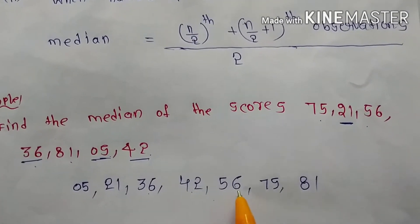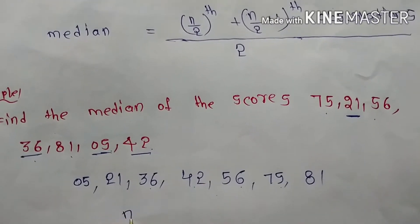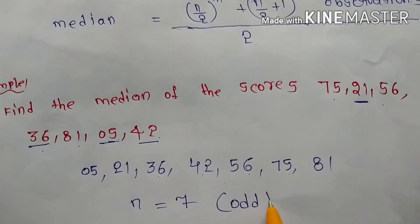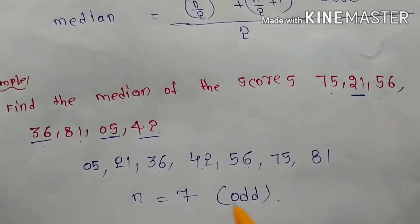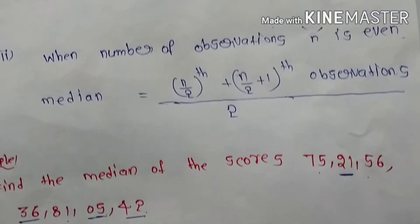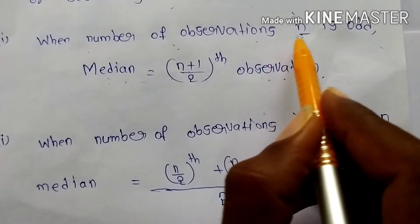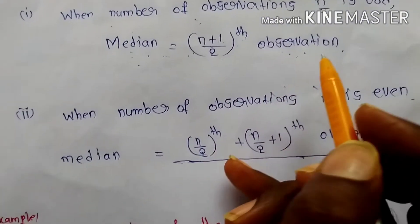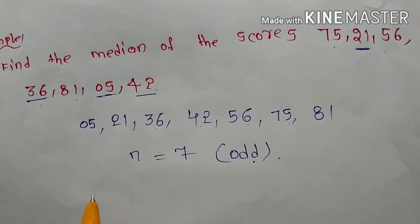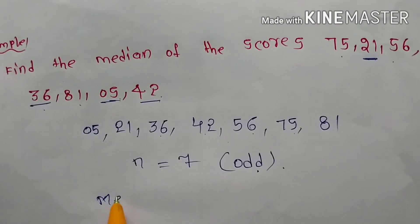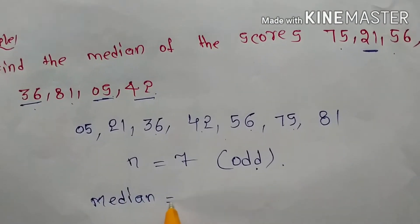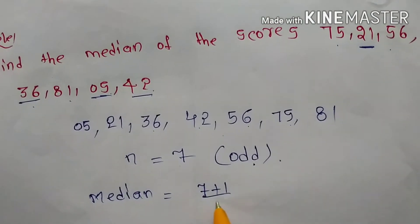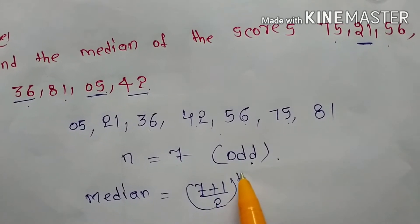Now count the observations: 1, 2, 3, 4, 5, 6, 7. So n equals 7, which is an odd number. For an odd number, the condition gives us median equals (n+1)/2 observation. Substituting: median equals (7+1)/2.